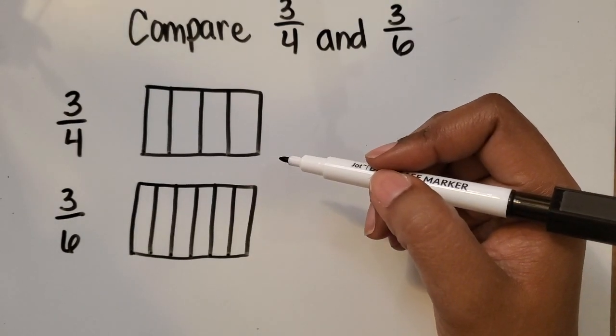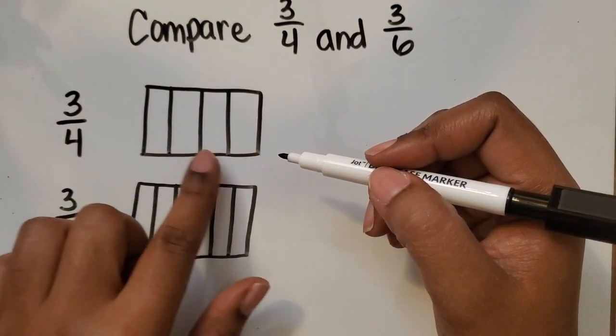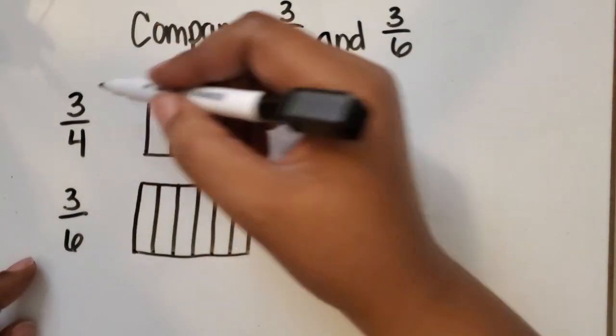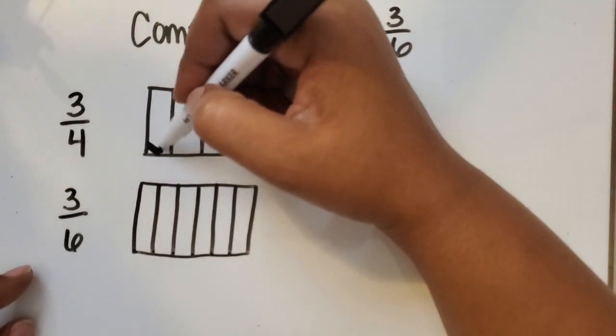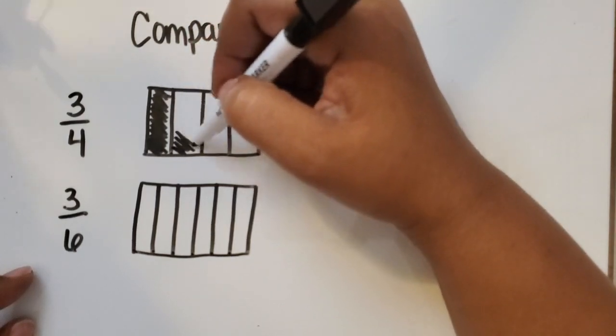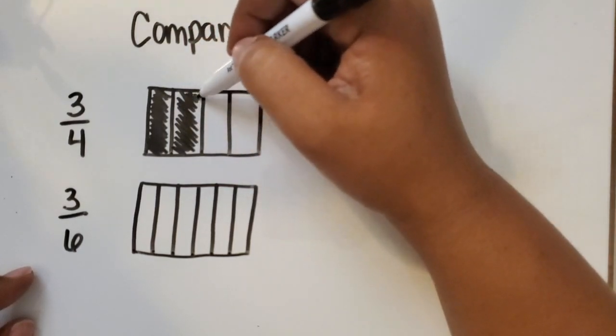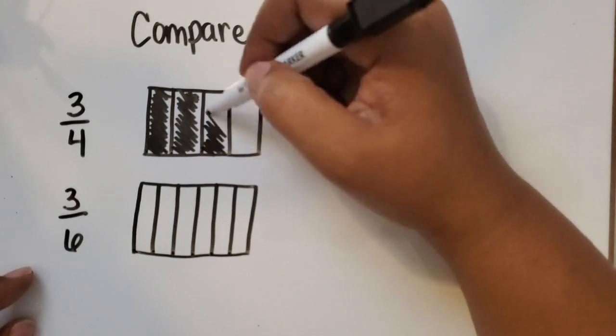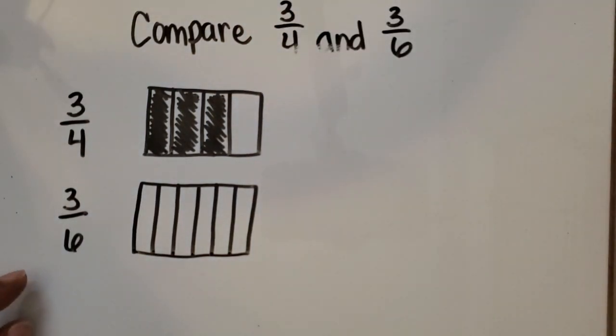So with the first whole, 3 fourths, out of the four equal parts, 3 is our numerator so we're going to shade in three of those four equal parts: 1 fourth, 2 fourths shaded in, and 3 fourths shaded in.